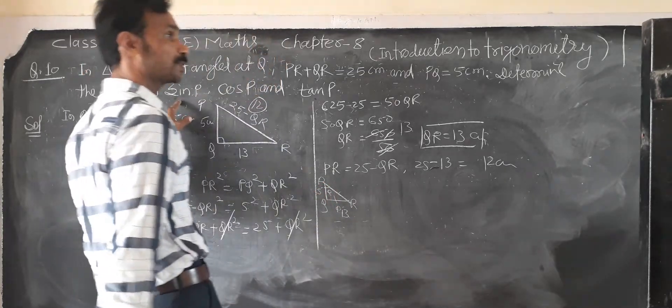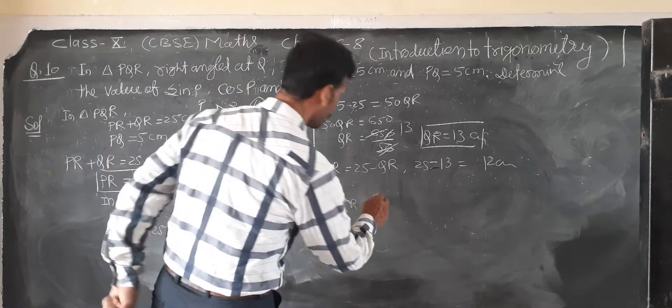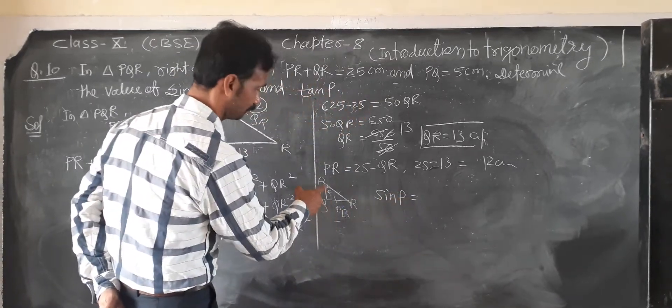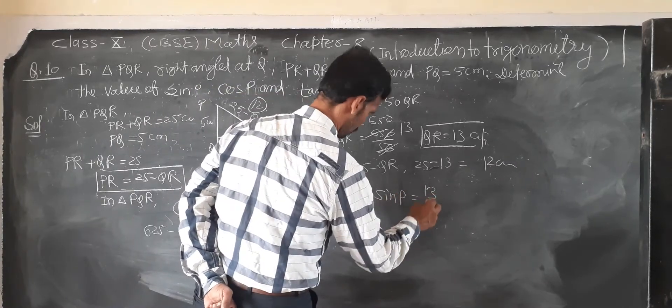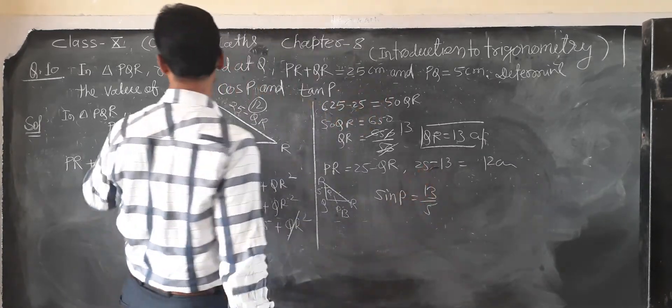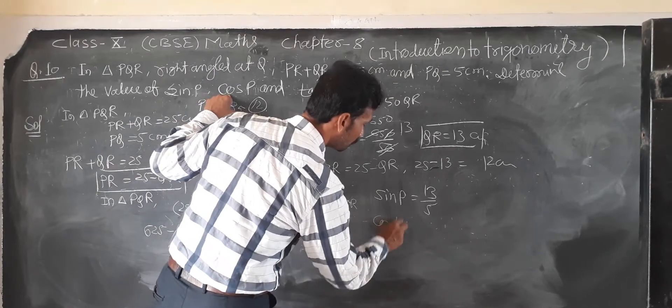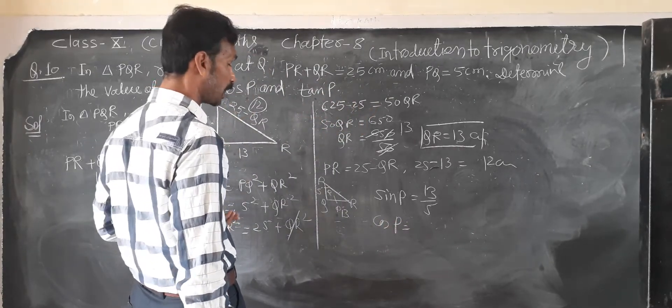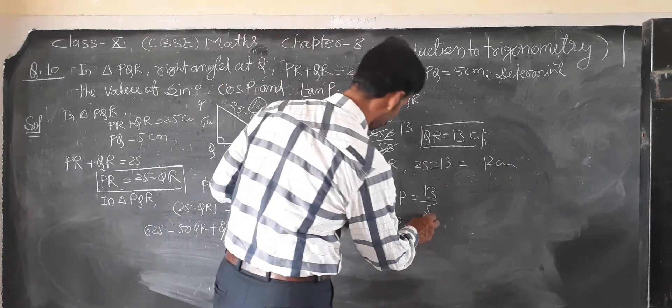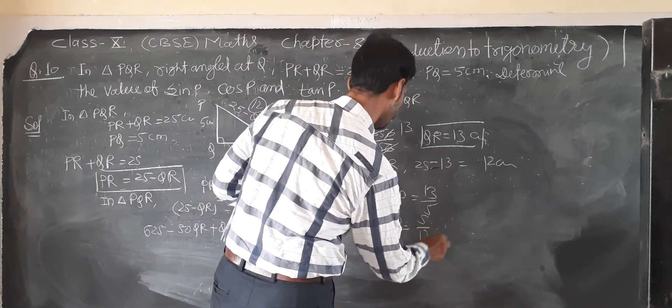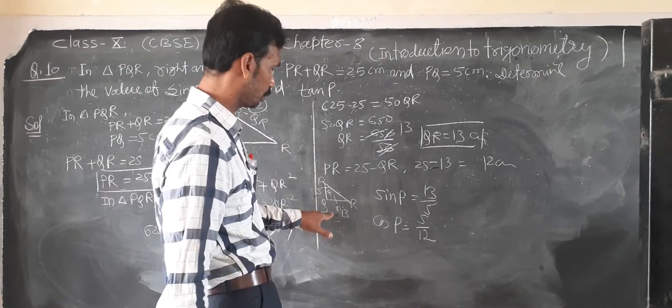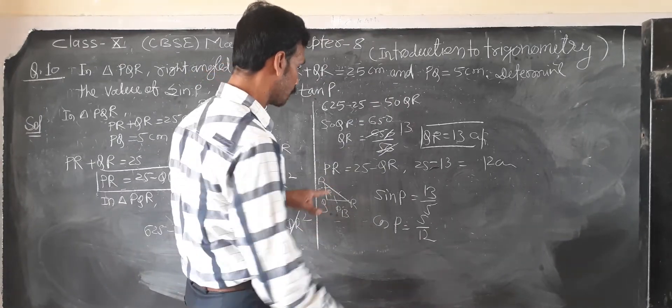Sin P equal to, value of sin P equal to upon hypotenuse. Sin P equal to perpendicular 13 upon hypotenuse 5. Then now next time, cos P, cos P, cos P. So cos P means base upon hypotenuse, so 5 upon 12. Perpendicular upon hypotenuse.